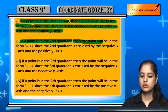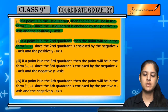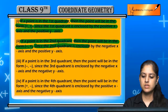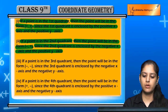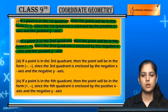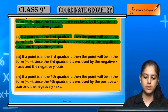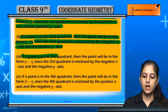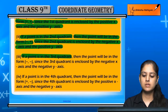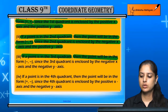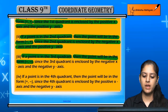If a point is in the second quadrant, then the point is in the form (-, +), because in the second quadrant the x-axis is negative and the y-axis is positive. If a point is in the third quadrant, then the point is in the form (-, -).